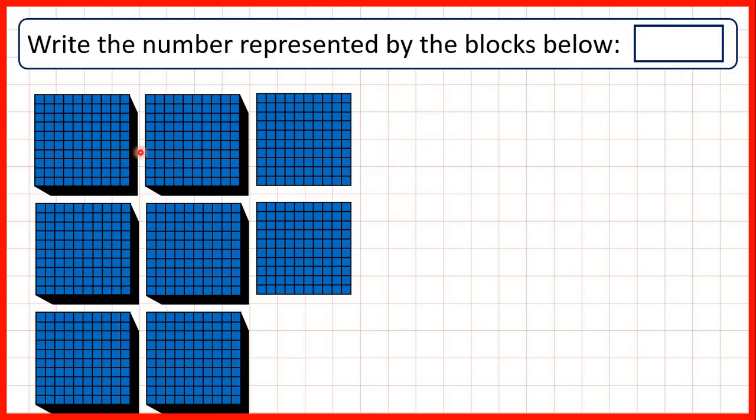Now here we have six thousands. We have two hundreds. But this time, we don't have any tens or ones. So we need to write two zeros to make the number six thousand two hundred.